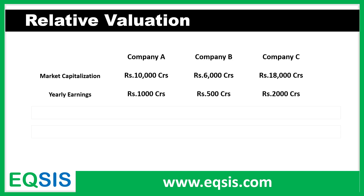If Company A earns 1,000 crores yearly, it is valued at 10 times its earnings. Company B earns only 500 crores, so in line with Company A at 10x, it should deserve only 5,000 crores — but it's actually getting 6,000 crores. So naturally, Company B seems to be overvalued by considering its earning potential, keeping Company A as the benchmark. That's why we call this relative valuation.